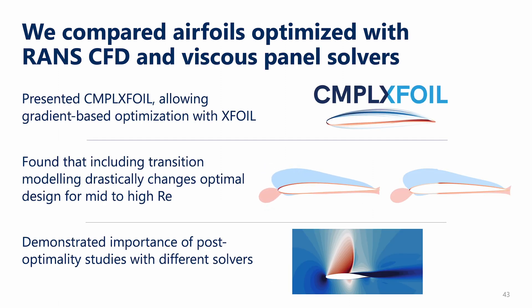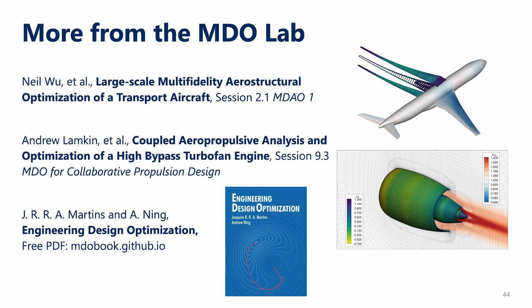So what did we show here? We started off by presenting ComplexFoil, a version of XFOIL modified for gradient-based optimization. By comparing airfoil optimizations in ComplexFoil and ADFLOW, our RANS tool, we found that including transition drastically changes the design for a wider range of Reynolds numbers than we might have expected. Finally, we showed how you can use post-optimality studies to analyze how the missing physics change from before and after optimization. I'll also point you to two more papers from the same ICAS conference showing applications of MDO to multi-fidelity aerostructural and aeropropulsive design optimization, and to the book Engineering Design Optimization by Martins and Ning if you're interested in the fundamental principles.